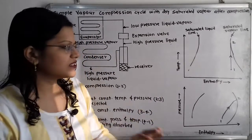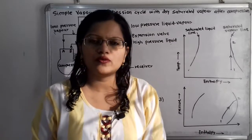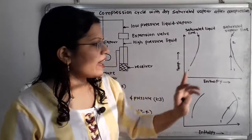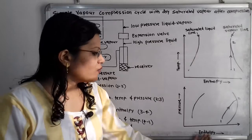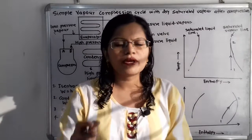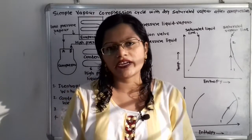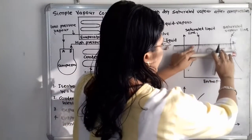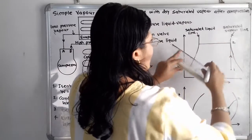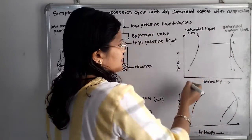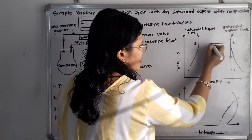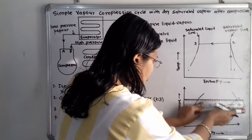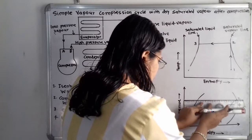During the cooling process, entropy decreases because heat rejection is taking place, and enthalpy also decreases as heat is rejected. On the temperature-entropy diagram, we draw a straight horizontal line from point 2 to point 3 at the saturated liquid line. Similarly, on the pressure-enthalpy diagram, we draw a straight horizontal line showing constant pressure and decreasing enthalpy.